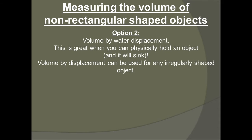Option two is getting your volume by water displacement. This is a great way to get volume when you can physically hold an object and it will sink. Don't try it with a cork. Cork won't sink.